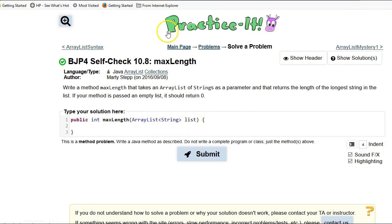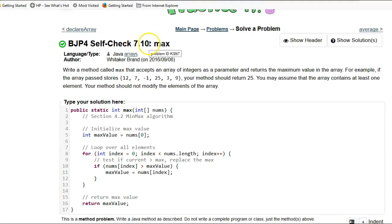The first thing I'm going to show you is that this problem is extremely similar to this problem, Self-Check 7.10. In this case they were using arrays and they were looking for the maximum value of an array of integers. But this code right here is the exact same logic, so you should take a look at that and figure out how to apply that logic.